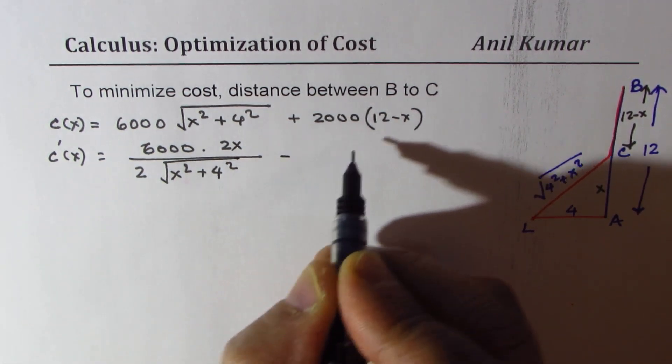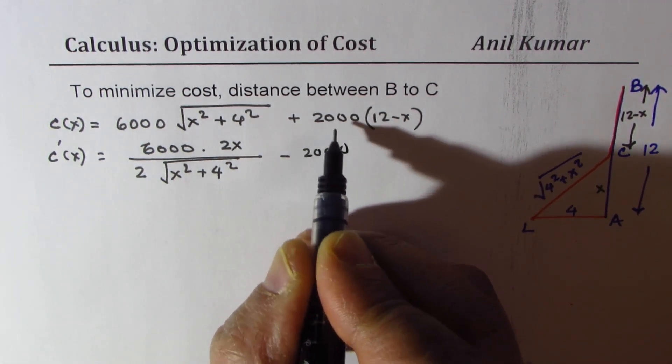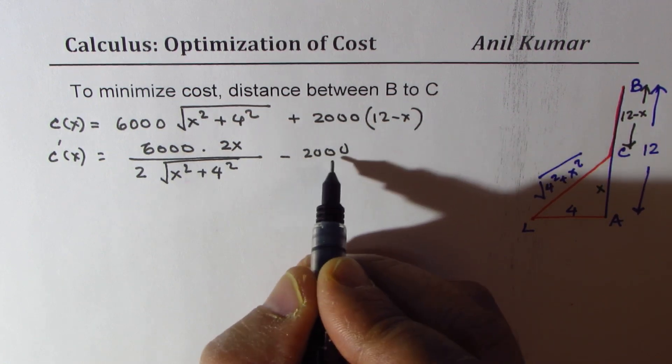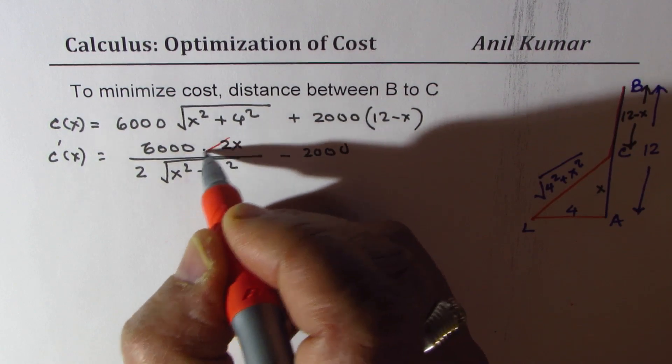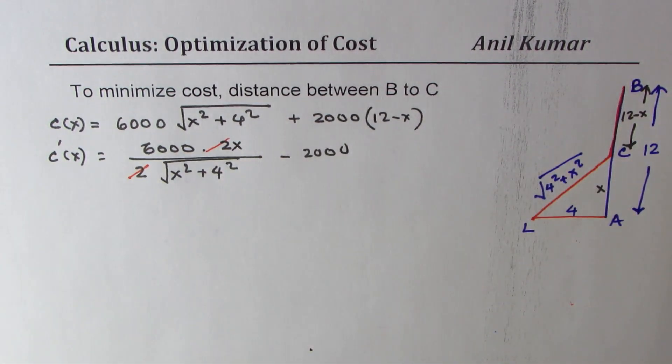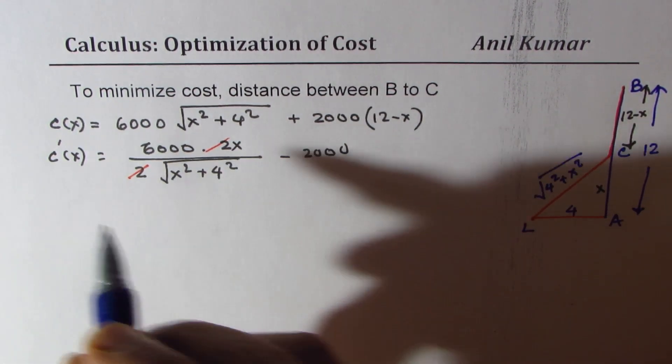Here it is minus 2. So 2,000 minus x will give us derivative as 2,000. We are simplifying, cancelling these zeros, and for critical number,